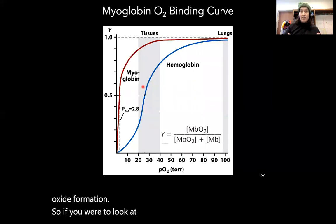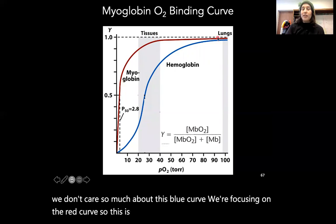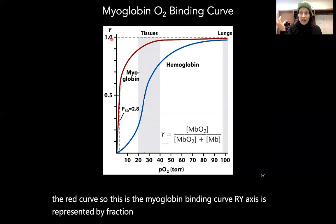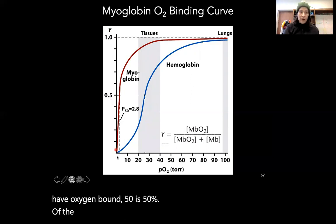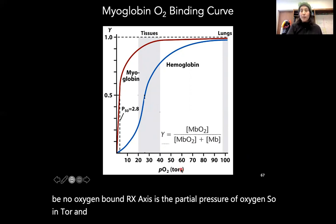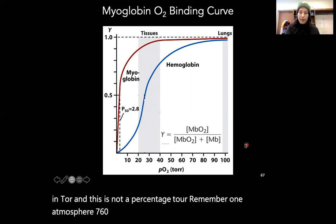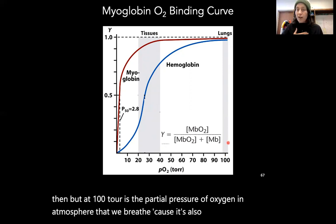If we look at a binding curve of myoglobin — we'll look at hemoglobin next, so for now we focus on the red curve — the y-axis is fraction bound, where 1 is 100% of proteins have oxygen bound and 0 is none. The x-axis is the partial pressure of oxygen in torr. One atmosphere is 760 torr. At 100 torr is the partial pressure of oxygen in the atmosphere we breathe and in our lungs.